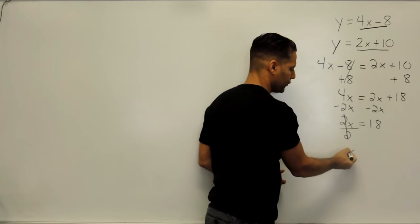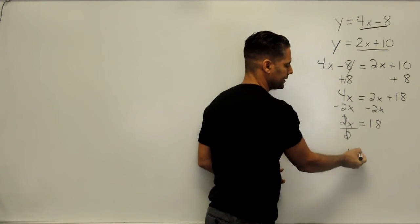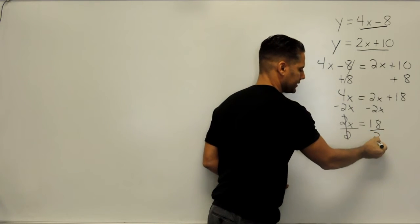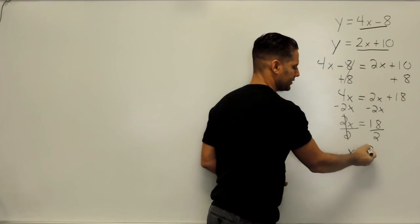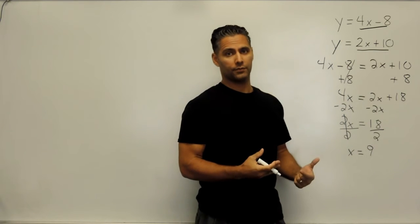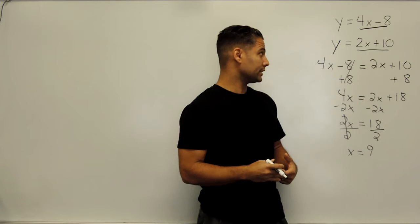So that leaves us with a coefficient of 1, which we don't have to write. And we have to balance our equation by dividing 18 by 2. 18 divided by 2 is 9. So we have already figured out that the x value for this system of equations is equal to 9.